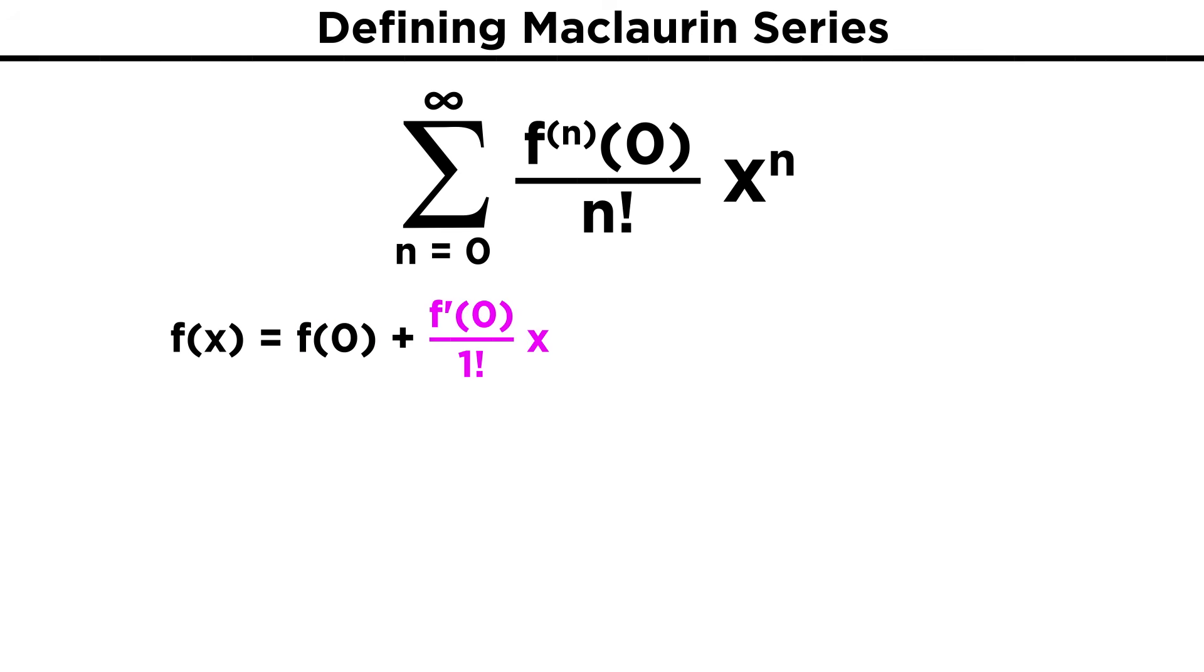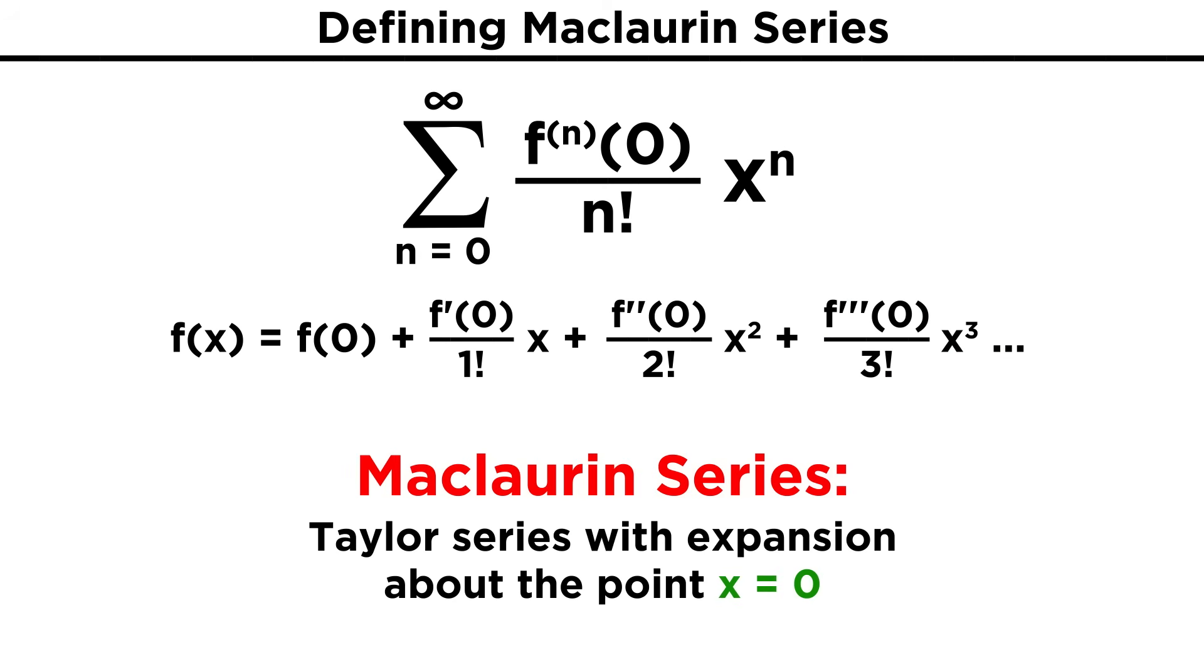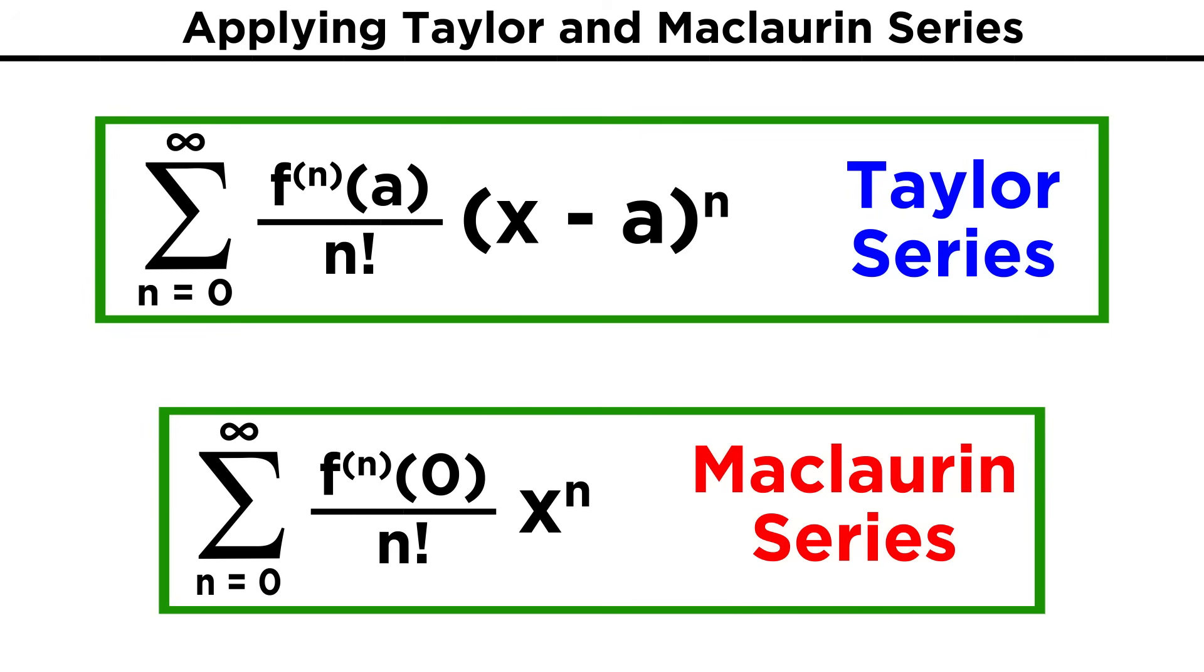Plus f double prime of zero over two factorial times x squared, and so forth. This is a special kind of Taylor series called a Maclaurin series. This is a Taylor series where the expansion is about the point x equals zero. So we should definitely be aware of these definitions for a Taylor series and Maclaurin series, because we are going to apply these expansions to specific functions.